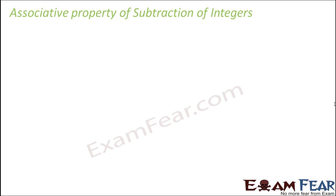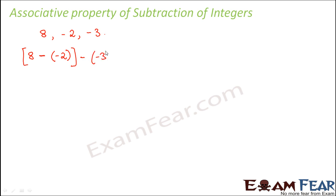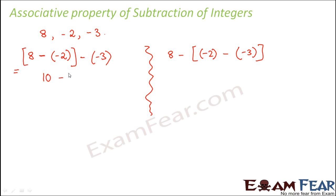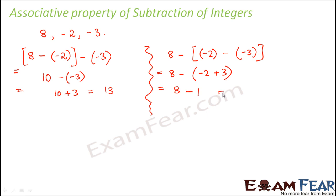Now, do you think the associative property holds true for subtraction of integers as well? Let's try. Take three integers: 8, minus 2, and minus 3. In the first case: 8 minus minus 2, then subtract minus 3. In the second case: 8 minus (minus 2 minus minus 3). In the first case, 8 minus minus 2 equals 10, minus minus 3 equals 10 plus 3, which equals 13. In the second case, minus 2 plus 3 equals 1, so 8 minus 1 equals 7.